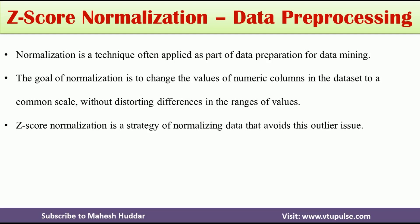In the previous video I discussed min-max normalization with a simple numerical example. The disadvantage of min-max normalization is that it will not avoid outliers, but we can use z-score normalization to remove outliers from the dataset. That is the best advantage of using z-score normalization. The link for the min-max normalization video is given in the description below.